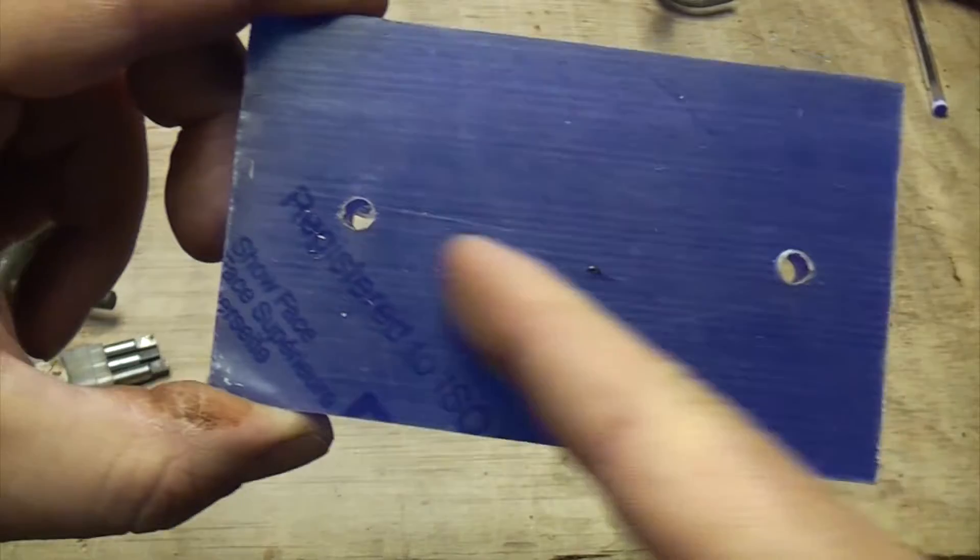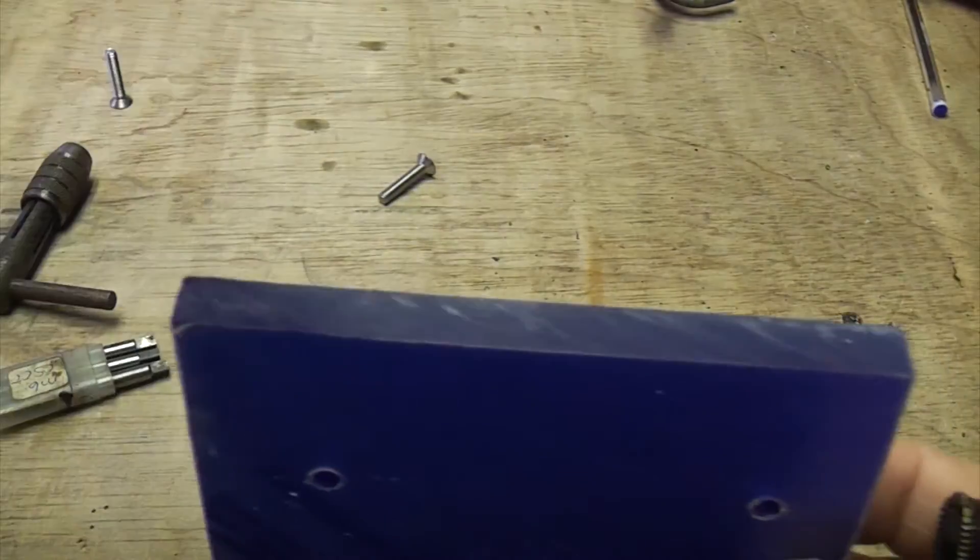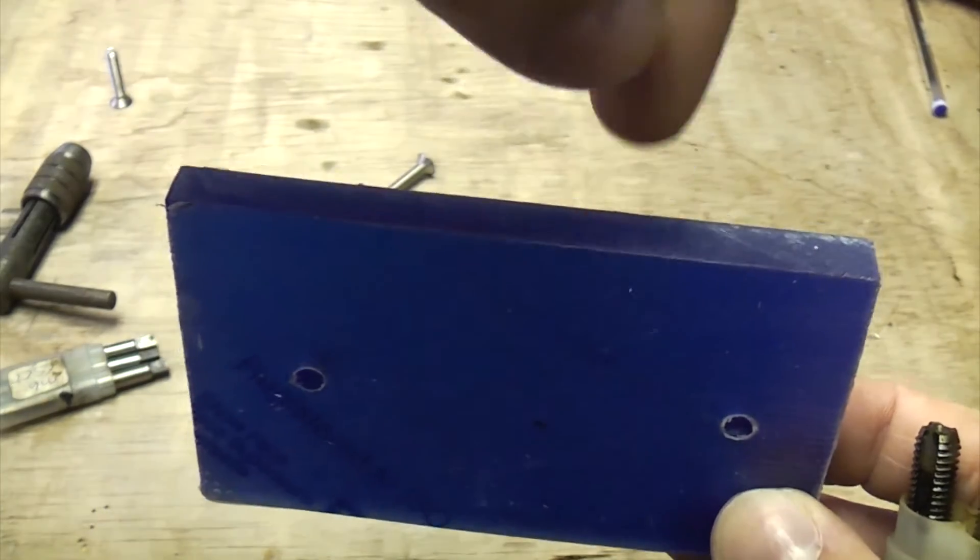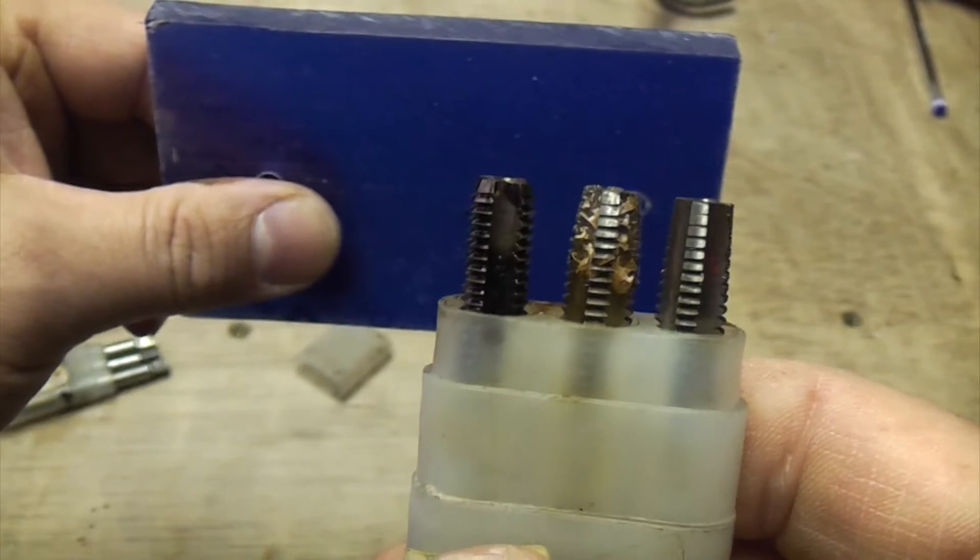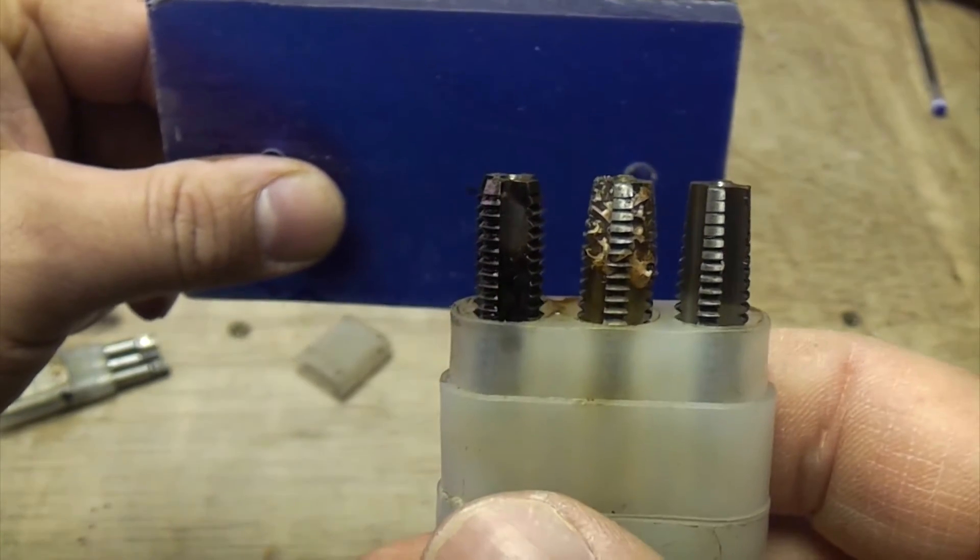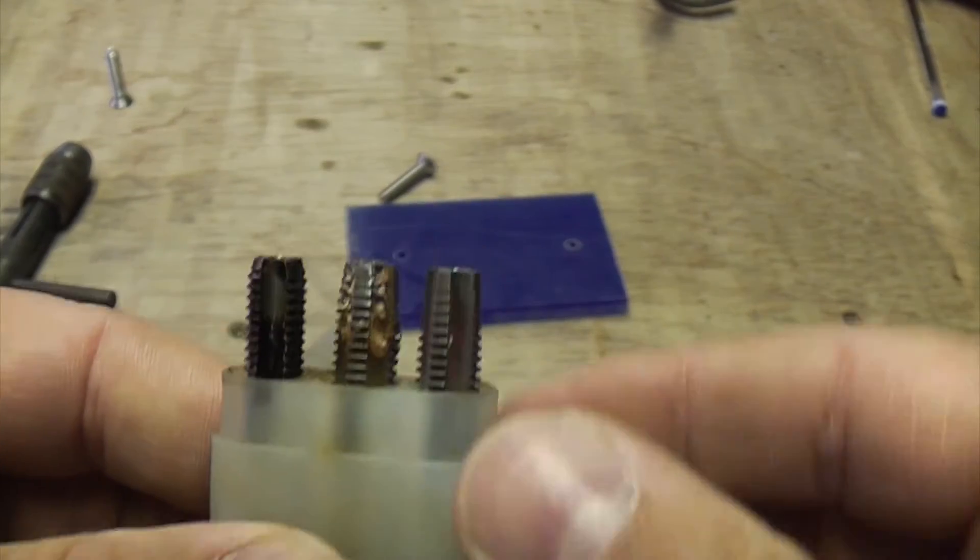Those holes go straight through the material, so you can use any kind of tap on them. But if you were to drill into the material that way and go say 20mm deep, you'd have to use a tap like that which is called a plug tap, which has got a flat end.